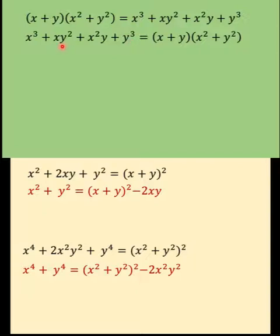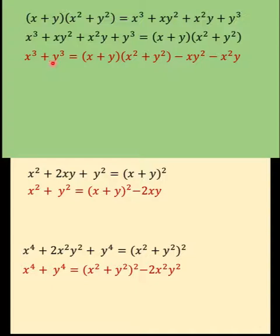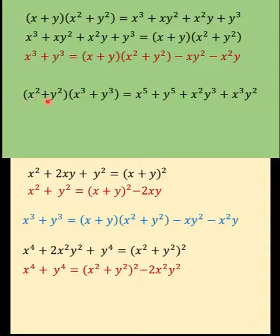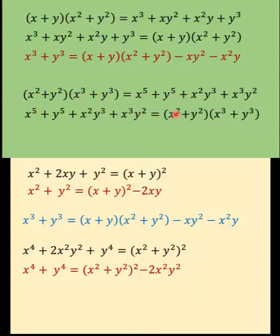...we subtract xy squared and x squared y from both sides of the equation to arrive at this equation — this is our expression for x to the third plus y to the third. Then, using the same process for x to the fifth plus y to the fifth, if we multiply the quantity x squared plus y squared times the quantity x cubed plus y cubed, this is the result. By the symmetric property, we can express this as x to the fifth plus y to the fifth.